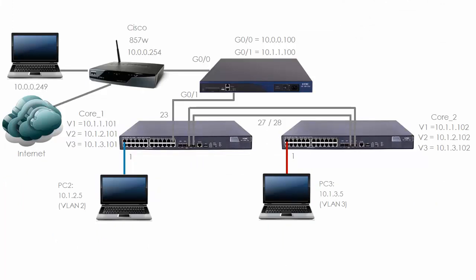So I'm able to ping both switches from my PC. 10.0.0.249 is able to ping both Core switches. Now we need to configure PC2 and PC3 in VLAN2 and VLAN3. I need to create VLANs on Core 1 and Core 2, put the ports into the relevant VLANs, and I'm going to set up multiple VLANs on both switches because these switches support inter-VLAN routing. I want to set up ports 27 and 28 as a link aggregation or bridge aggregation.